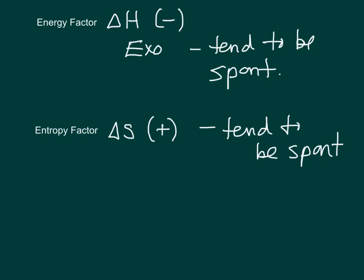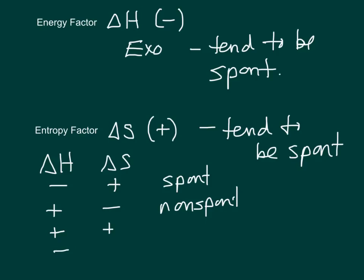But there's two factors involved, so what do you do with that? Obviously, if delta H is negative and delta S is positive, it's spontaneous. If delta H is positive and delta S is negative, you're guaranteed to be non-spontaneous. But what about if this is positive and this is positive, or this is negative and this is negative? We don't know, right?